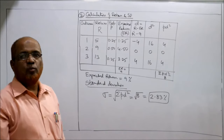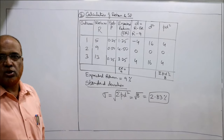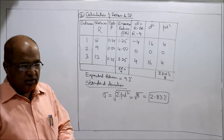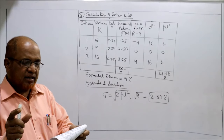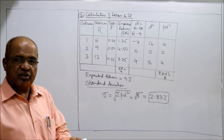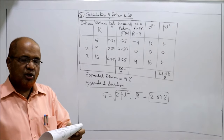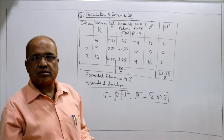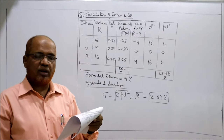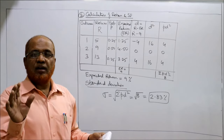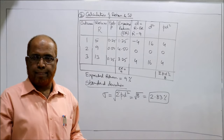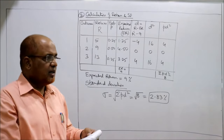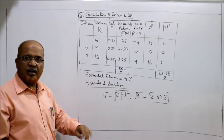Now we start problem number 3. Take a pause of this video and copy down the complete solution — each and every part I am explaining. Third problem: calculate the expected return and risk (standard deviation) for Prima Limited for 2018, given the following information. Probabilities and returns are given, so exactly the same procedure. One point: returns are given in fractions — 0.20, 0.16, 0.12, 0.05, −0.05. Returns can be taken as fractions or percentages, we get the same answer.